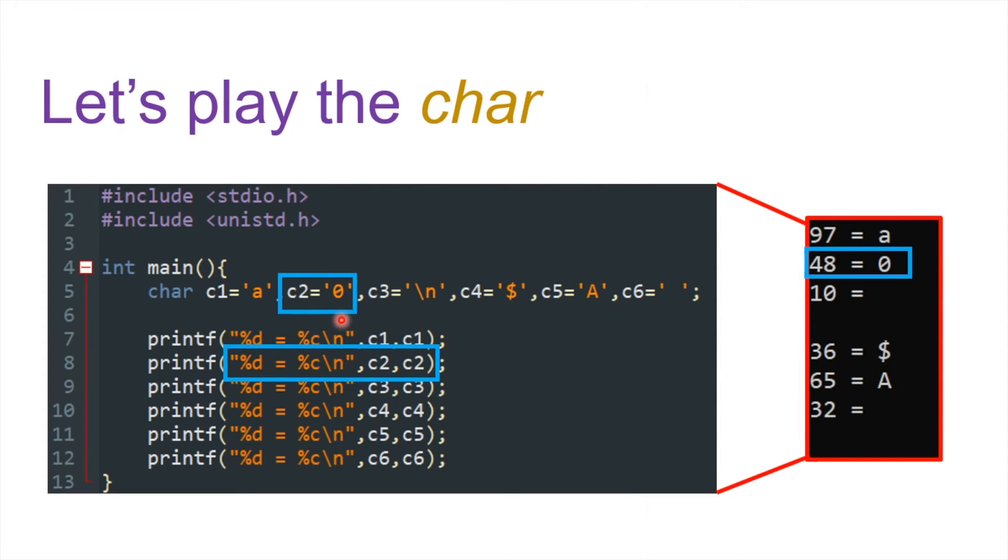And also, this one is special. It's a character for zero, not the value zero. So they are different. You could see a character zero has the value of 48.